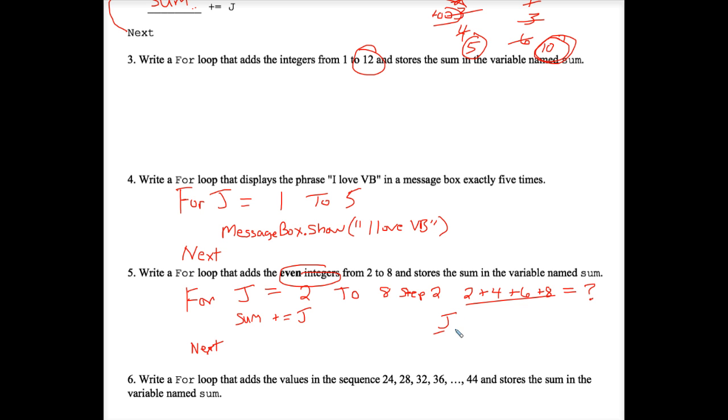Go ahead and trace this for fun, even though it's not expected on this worksheet. Trace J and don't forget J starts at two. You can assume that sum starts at zero. And see what total you get for sum. You should get 20, because I just added this all up in my head. Two plus four plus six plus eight. It should be 20. But go ahead and trace that one.